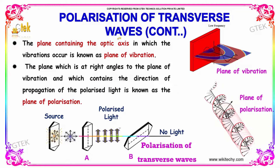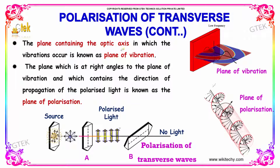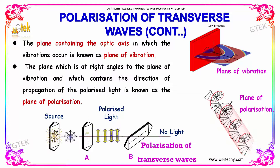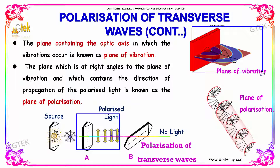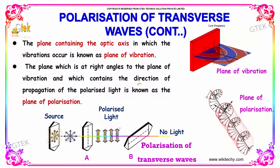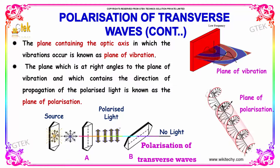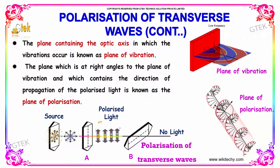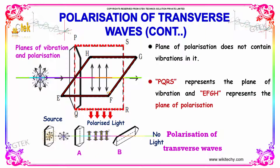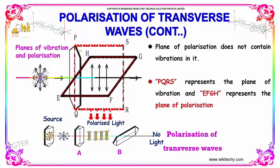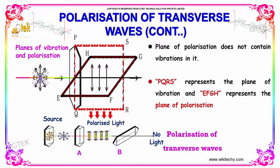Now we look at the polarization of transverse waves. The plane containing the optical axis in which the vibrations occur is referred to as the plane of vibration or plane of propagation. The plane which is at right angles to the plane of vibration and which contains the direction of propagation of the polarized light is referred to as the plane of polarization. The plane of polarization does not contain vibration. P, Q, R, S represent the plane of vibration and E, F, G, H represent the plane of polarization.